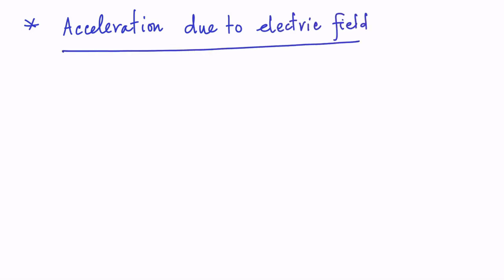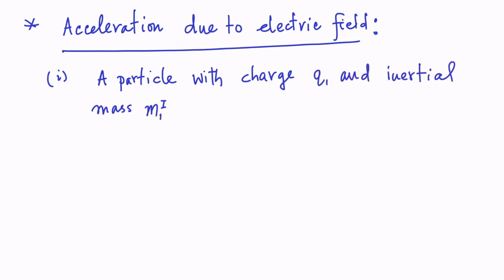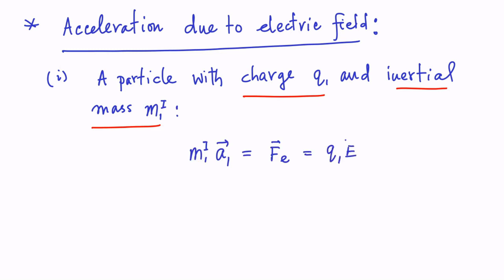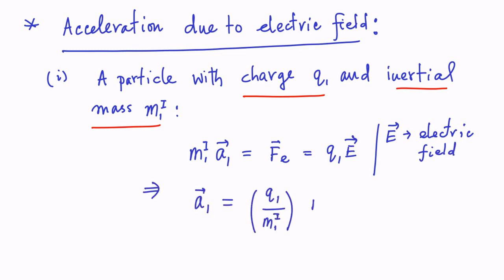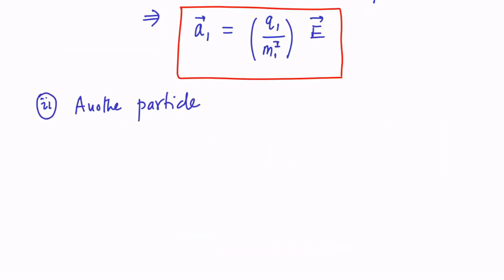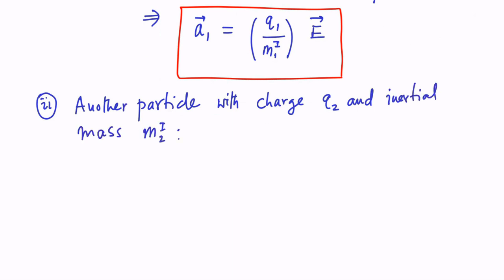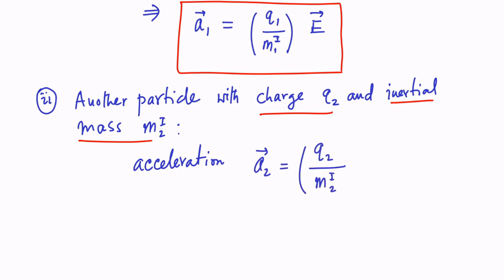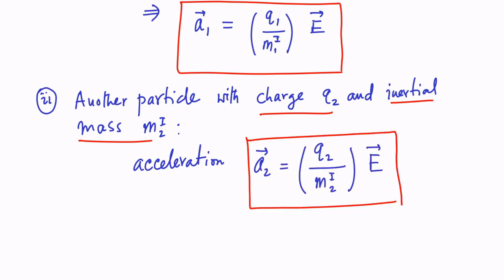In order to understand the role of inertial mass and gravitational mass, let us consider the acceleration of a charged particle due to an electric field. Consider a particle with charge q1 and inertial mass m1^i. Using Newton's second law, the resultant acceleration is a1 = (q1 / m1^i) times the electric field E. For another particle with charge q2 and inertial mass m2^i, the acceleration is a2 = (q2 / m2^i) times E. In general, a1 is not equal to a2, as it depends on the ratio of electric charge to inertial mass.